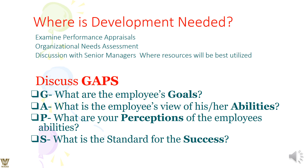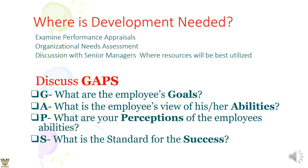Discussing gaps: GAPS stands for Goals, Abilities, Perception, and Success. If we can understand employee goals and map them to the goals of the organization, that is ideal. Not every goal can be mapped because we may lack requisite abilities. Understand the employee's abilities, your perception of those abilities, and find the gaps. If you can mitigate those gaps, you decide upon the standard of success. With this, I come to an end for this presentation. Thank you.